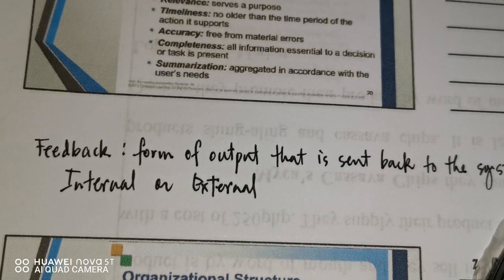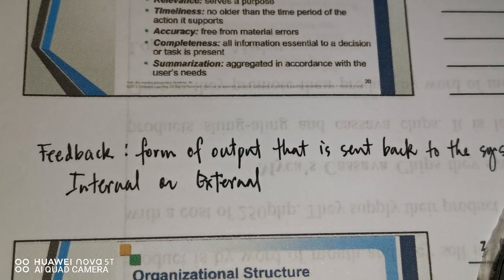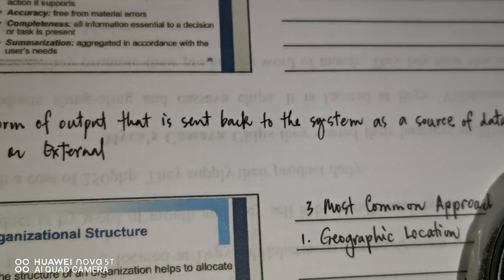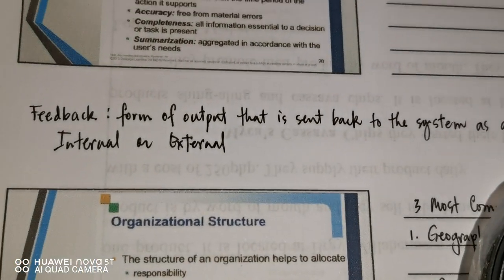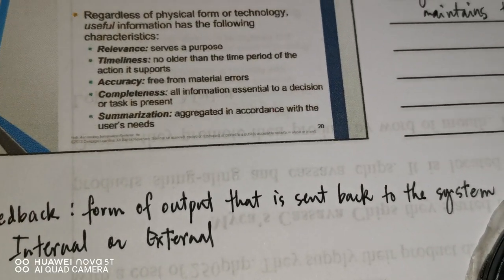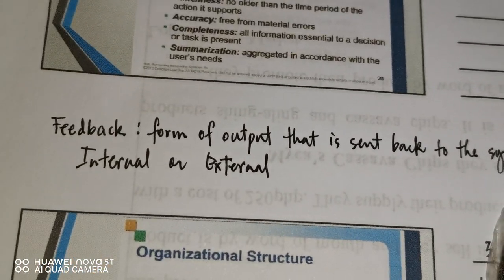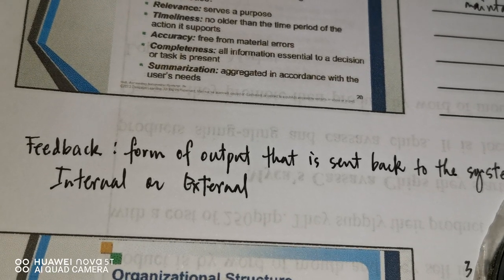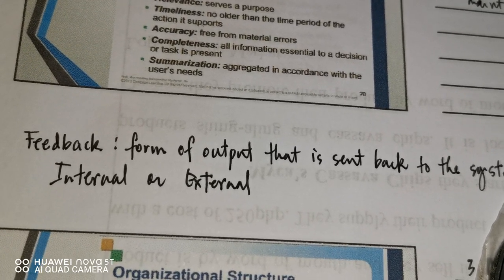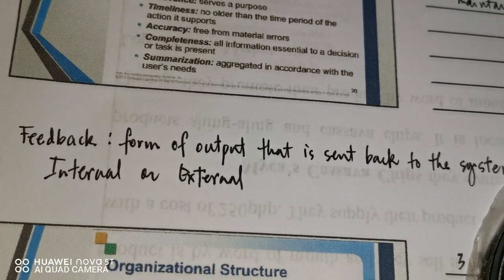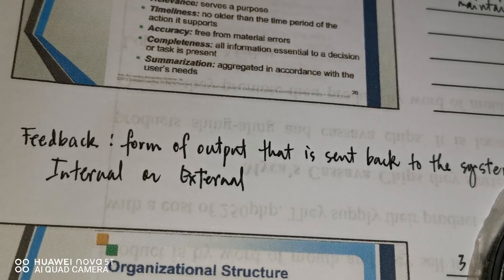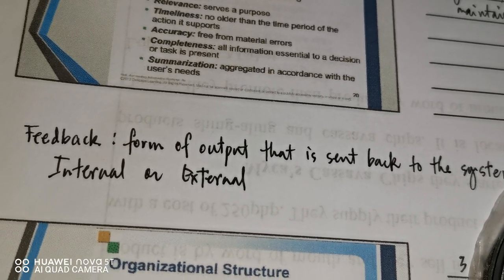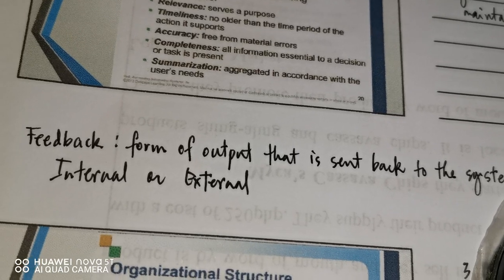The last element is feedback — it is a form of output sent back to the system as a source of data, either internal or external. Feedback is like asking for an opinion on whether the information is okay or accurate. It can be obtained internally, from within the firm, or externally, from outside the firm.